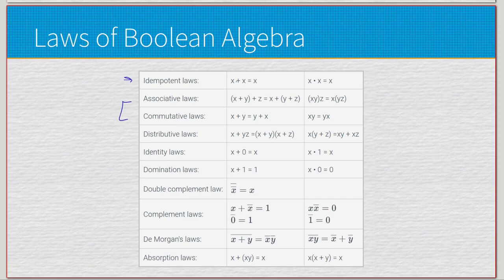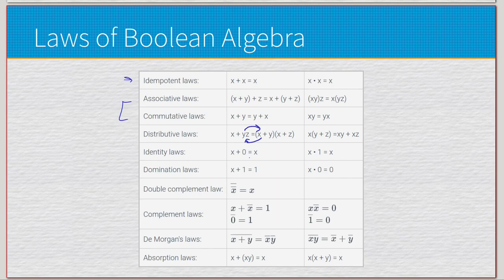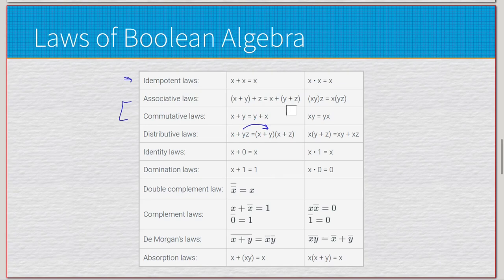The distributive law says x plus (y times z) can be changed to (x plus y) times (x plus z). Keep in mind it works both ways since they're equivalent. Sometimes you might need to go from the simpler format to the more expanded format in order to apply more laws. It's not always going to be straightforward which direction you want to apply the distributive law.